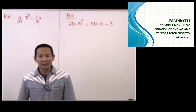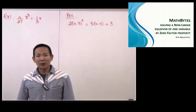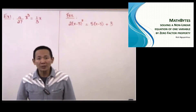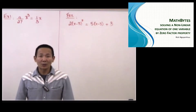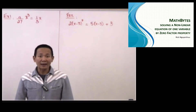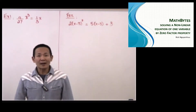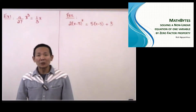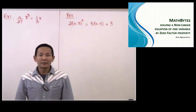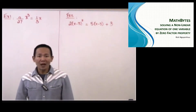Therefore, the degree of the equation will tell you how many solutions the equation may have. If we have the degree of three — that is the highest exponent of the unknown in the equation — that equation may have up to three solutions.